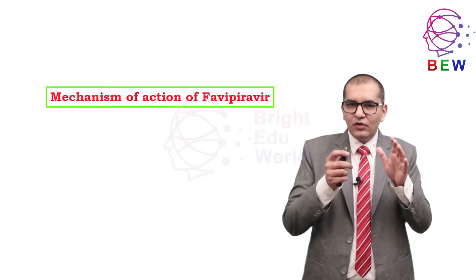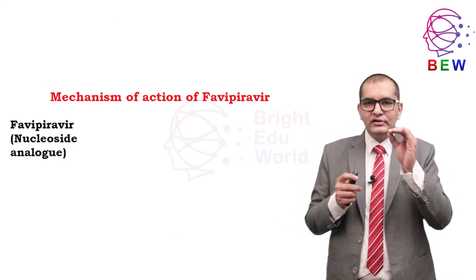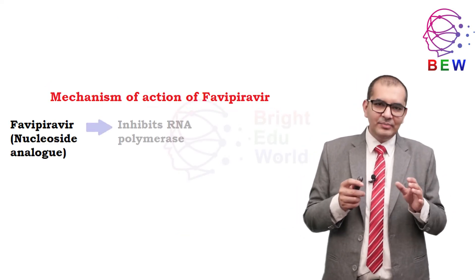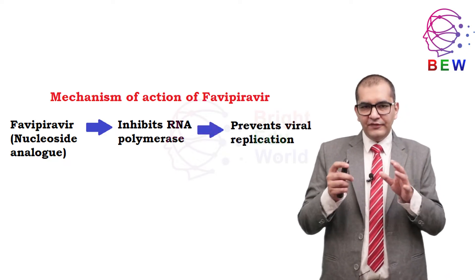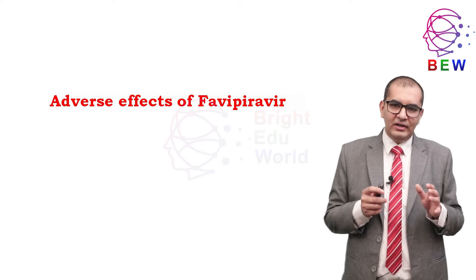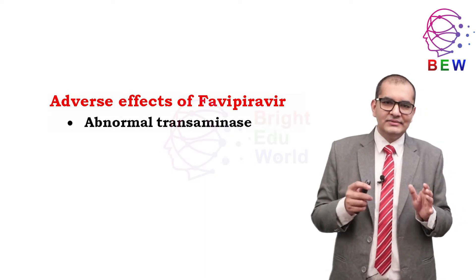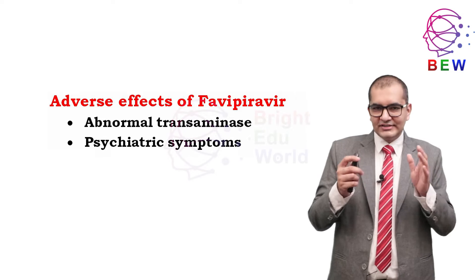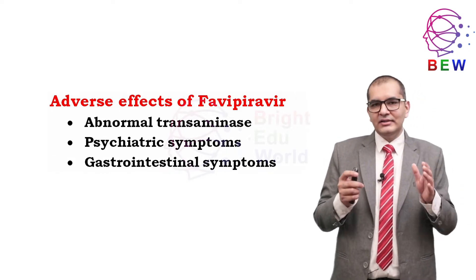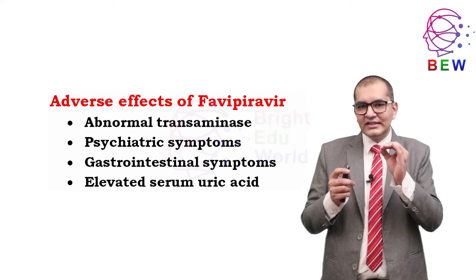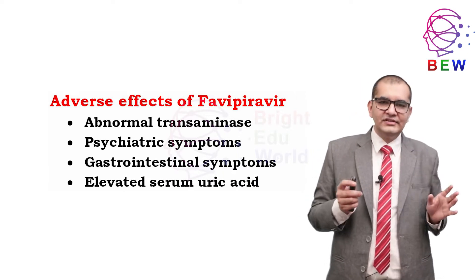Favipiravir's mechanism of action is inhibition of viral RNA polymerase. Adverse effects include abnormal transaminase, psychiatric symptoms, gastrointestinal discomfort, and elevated serum uric acid after prolonged use.